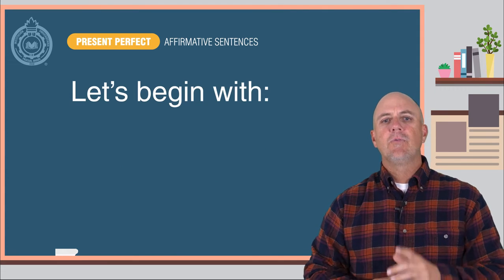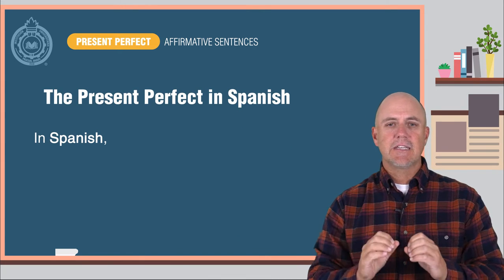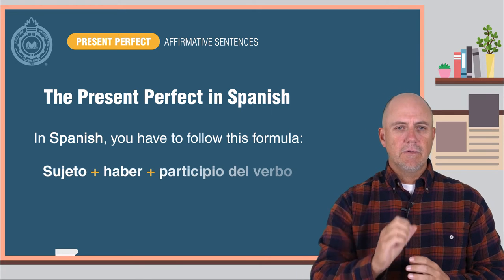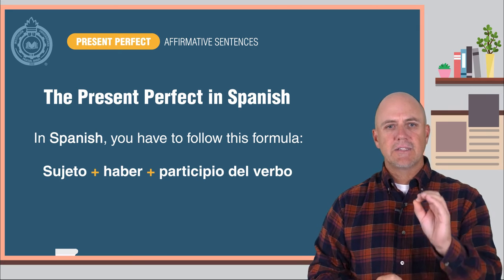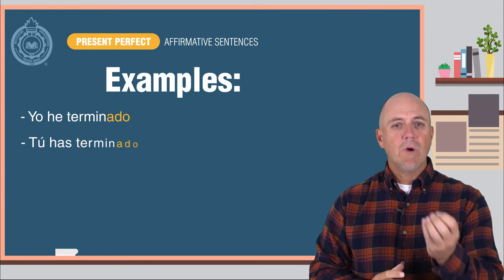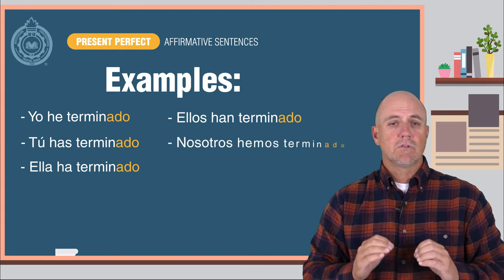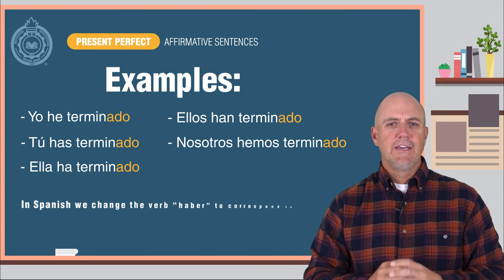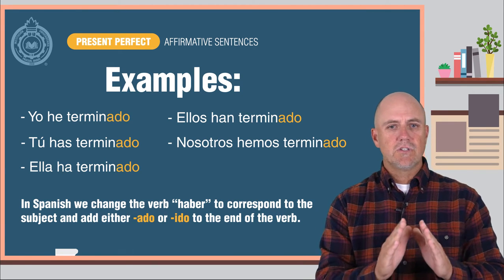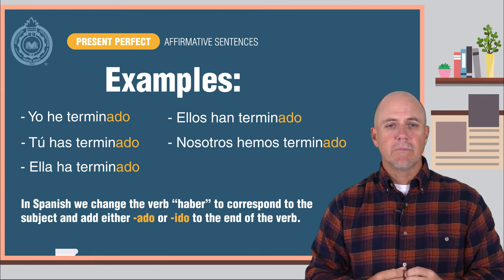Let's begin with what you already know: the present perfect in Spanish. In Spanish, to make a sentence in the present perfect tense, you have to follow this formula: Sujeto más haber más el participio del verbo. Here are some examples: Yo he terminado. Tú has terminado. Ella has terminado. Ellos han terminado. Nosotros hemos terminado. You can easily see how in Spanish we change the verb haber to correspond to the subject and add either -ado or -ido to the end of the verb. Simple.